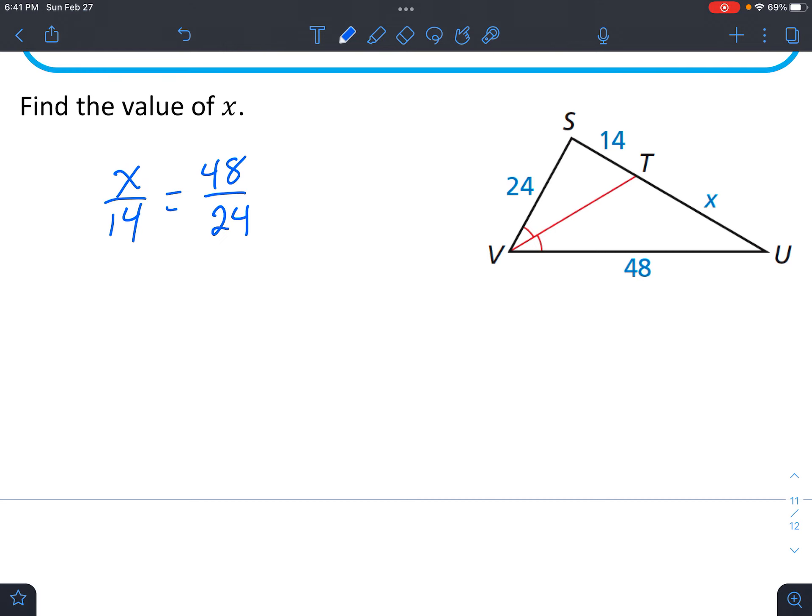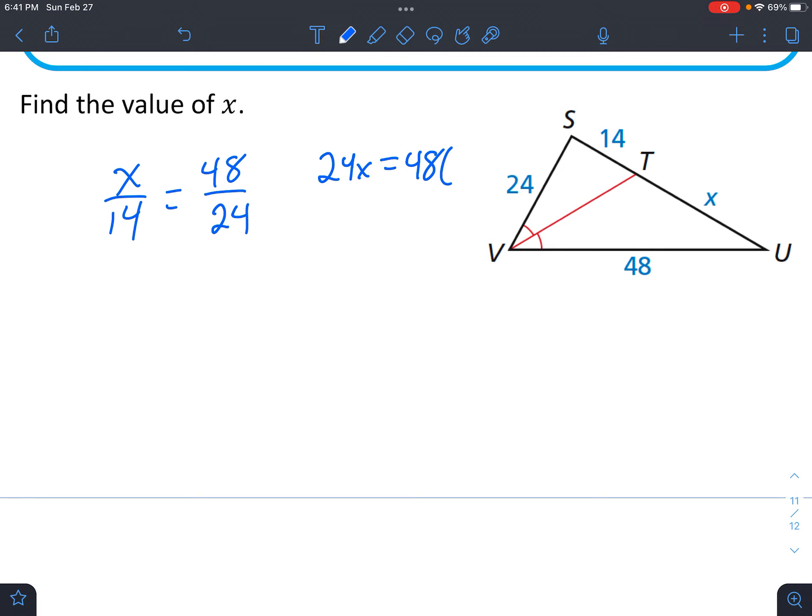All right, now let's solve our proportion. So we get 24X equals 48 times 14. And that simplifies to 672. Divide both sides by 24. And we'll end up with 28. All right, that's it.